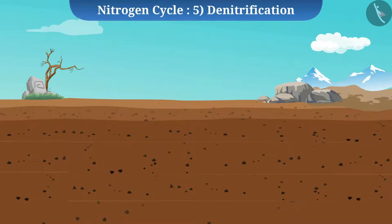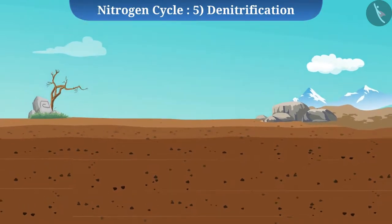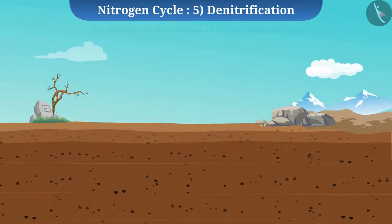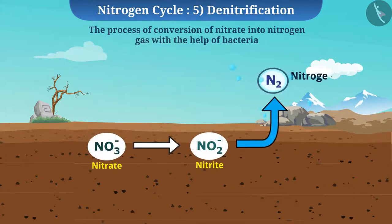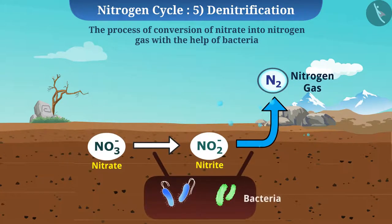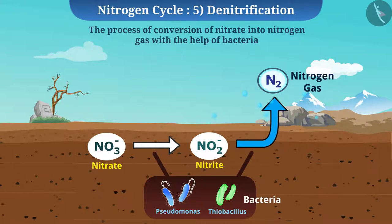Now we are at the final stage of the cycle — denitrification. The process in which nitrogen makes its way back into the atmosphere by the conversion of nitrate into nitrogen gas, with the help of bacteria such as Pseudomonas and Thiobacillus, is called denitrification. This completes the nitrogen cycle, maintaining the percentage composition of nitrogen in the atmosphere.